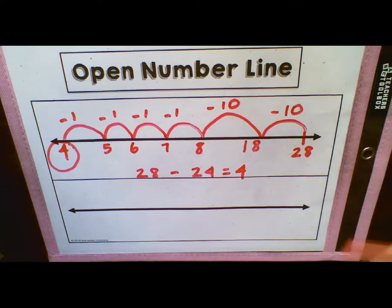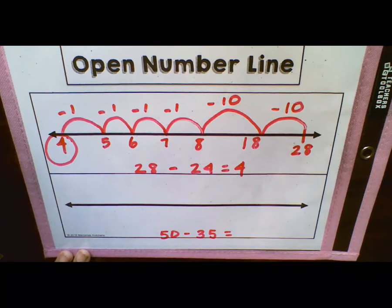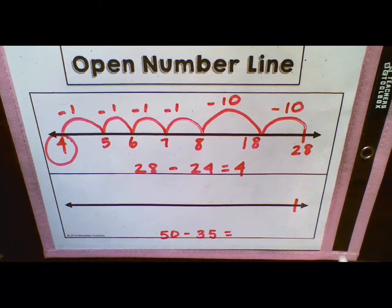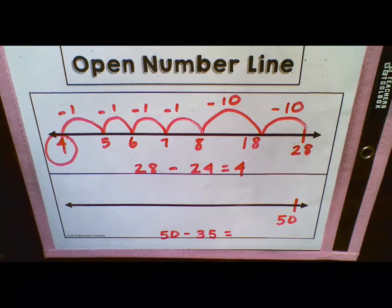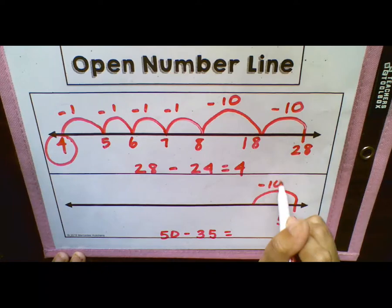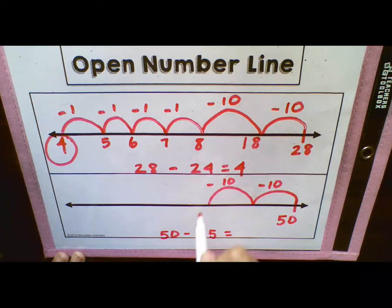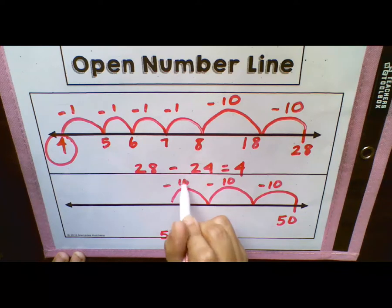Let's go ahead and look at another one. We are going to do 50 minus 35. So again, we are subtracting, so we are going to write our number at the very end and work our way backwards to the left. So we're going to write 50, and they want us to subtract 35 from it. Honing in on place value — the number 35 has three tens and five ones. So we are going to go back three tens, one ten at a time. That's one jump minus 10, two jumps minus 10, and three jumps minus 10. So we have our ten, twenty, thirty counted back.